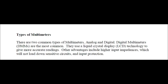Alright guys, let's get started. Types of multimeters. There are two common types of multimeters: analog and digital. Digital multimeters, DMMs, are the most common. They use a liquid crystal display — LCD technology — to give more accurate readings. The other advantages include higher input impedances, which will not load down sensitive circuits, and input protection.